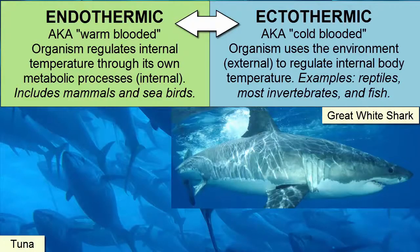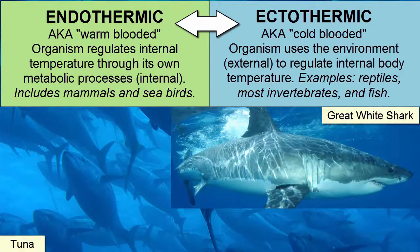Ectothermic and endothermic are end-member descriptions of heat regulation, and in the natural world many organisms sit somewhere between the two. Though fish are generally considered ectothermic, tuna and the great white shark are considered endothermic because they use internal metabolic processes to raise their internal temperature higher than their surrounding environment. However, their internal temperature is also affected by their environment and fluctuates as they move through varying ocean temperatures.